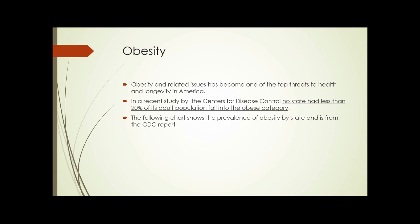First is obesity. Obesity and related issues has become one of the top threats to health and longevity in America. In a recent study by the Centers for Disease Control, no state had less than 20 percent of its adult population fall into the obese category. The following chart shows the prevalence of obesity by state, from the CDC report.